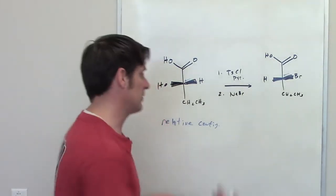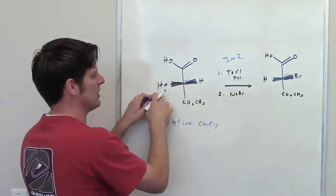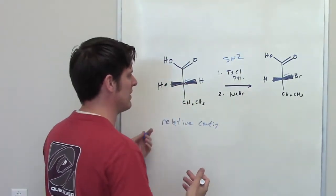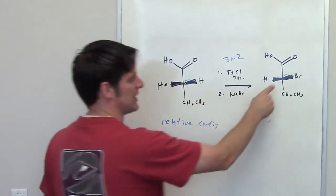You can imagine why that would happen. Of course, the reason is because it's an SN2 reaction. As soon as that group is converted into an OTS, it's now a wicked good leaving group. This bromide must come in from the backside and kick it off, inverting the stereochemistry.